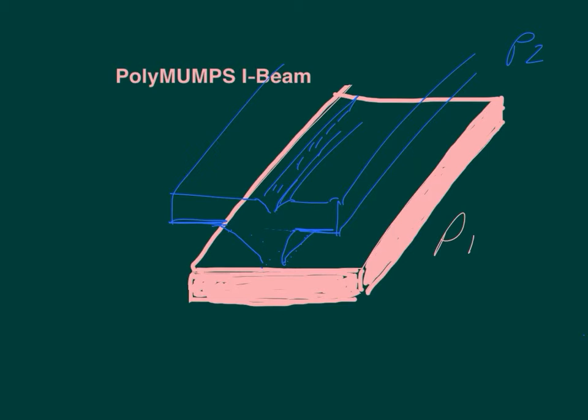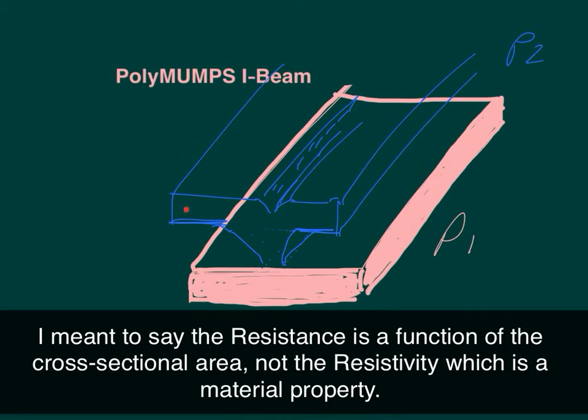Now, this would be a very stiff structure. And if you remember from the thermal actuator short lecture, the resistivity is a function of the cross sectional area and the length of the device.